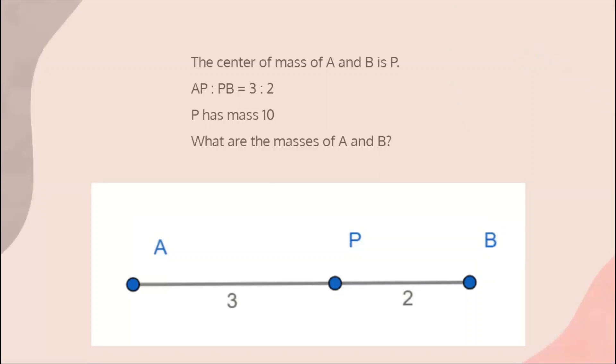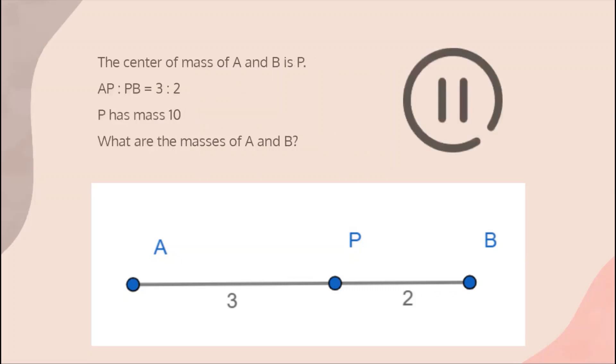In order to test your understanding, let's try a simple problem with this. The center of mass of A and B is P. The ratio of AP to PB is 3 to 2. P has a mass of 10. What are the masses of A and B? Okay, so please pause this video for a moment to try this.